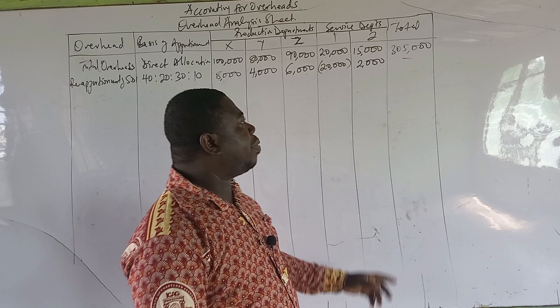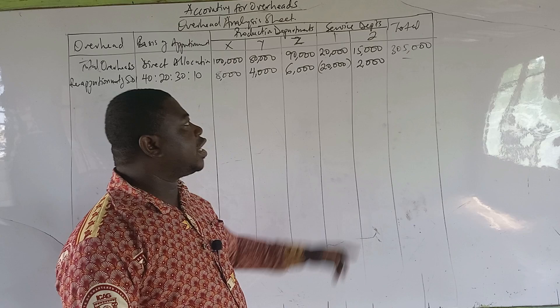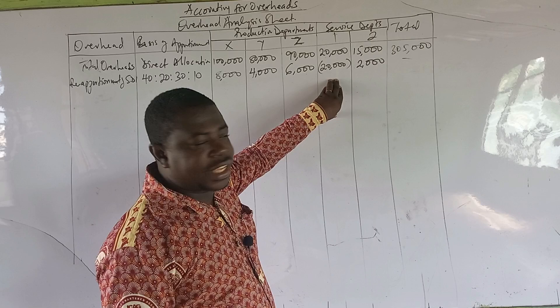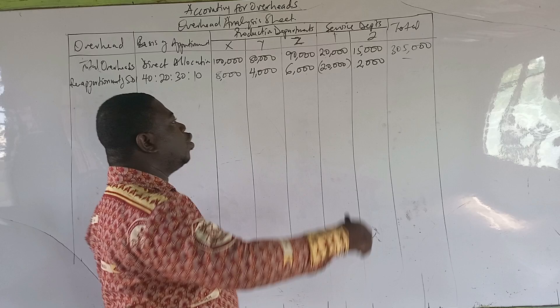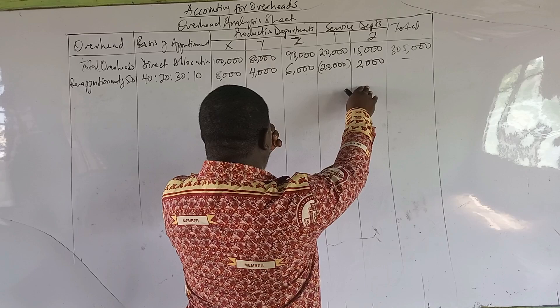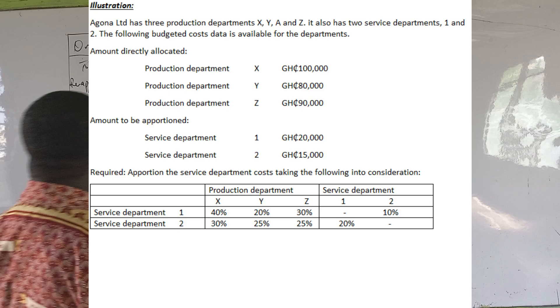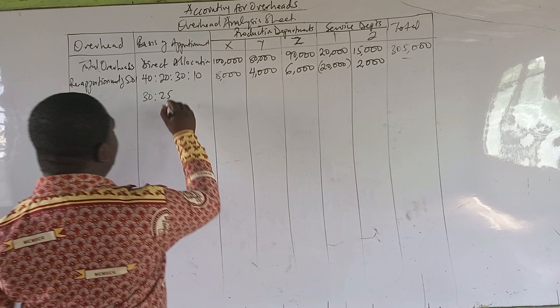Remember, this time there is a reciprocal service. Service department 1, even though we are finished sharing it, is still going to get a share of department 2 because they also benefit. In the previous example we didn't give the first service department again, but here, because the ratio allocates a portion to department 1, we still have to give it. The ratio for sharing department 2 is 30 is to 25 is to 25 is to 20.